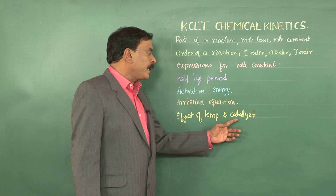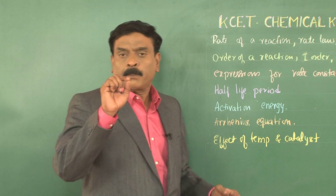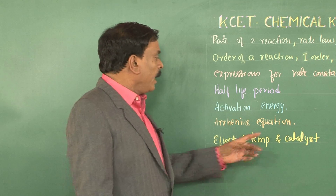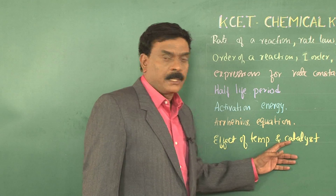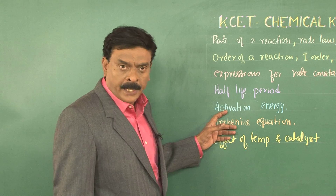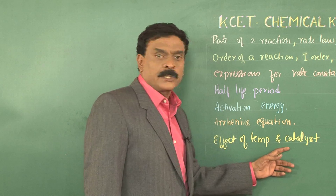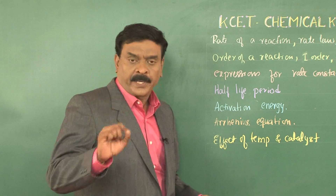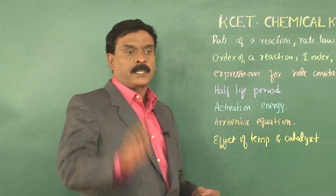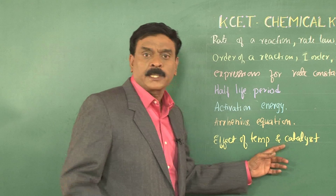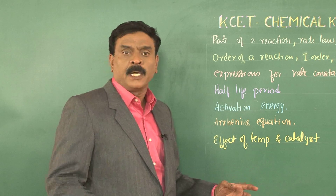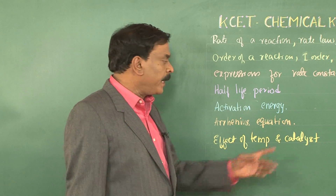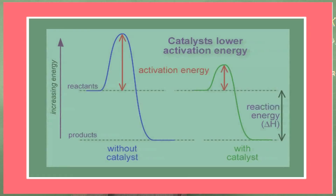Coming to the effect of catalyst: a positive catalyst is one which increases the rate of a reaction. The role of a catalyst in relation to activation energy is that when a catalyst is used, the catalyst surface provides an alternate path for the reaction. When the reaction takes place on the surface of the catalyst in the alternate path, the activation energy is lowered, and therefore the rate of the reaction increases.